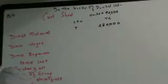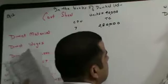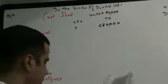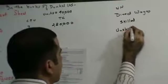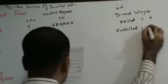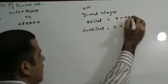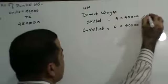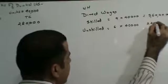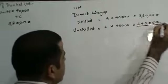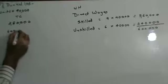Next, direct wages. Direct wages is further divided into skilled workers and unskilled workers. Skilled workers are 9 rupees per unit and unskilled workers are 6 rupees per unit, and total units manufactured is 40,000. So 9 into 40,000 is 3,60,000 and 6 into 40,000 is 2,40,000. This gives you 6 lakhs total direct wages.